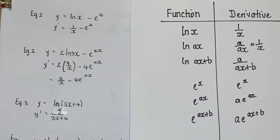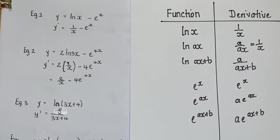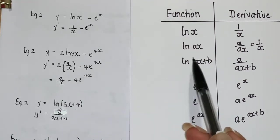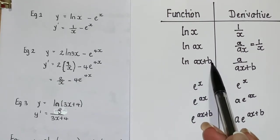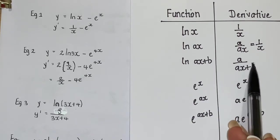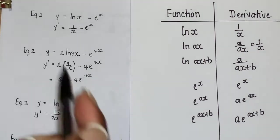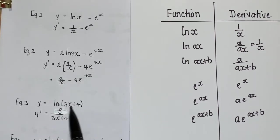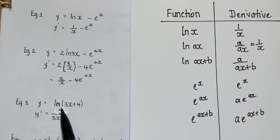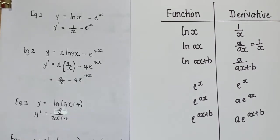In Example 3, we have y = ln(3x + 4), which follows the ln(ax + b) pattern. So for ln(3x + 4) we're going to get 3 over (3x + 4). Remember, we differentiate the inside and put our answer over the original function. When we differentiate 3x + 4 inside, we get 3, and it goes over the entire 3x + 4.